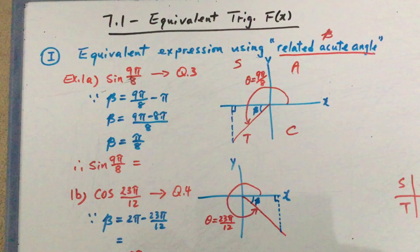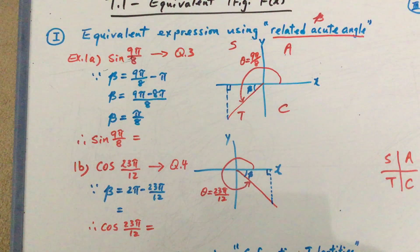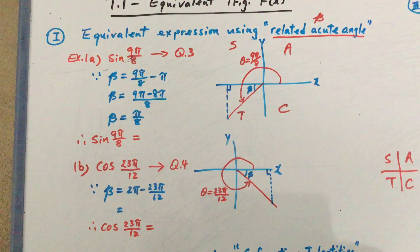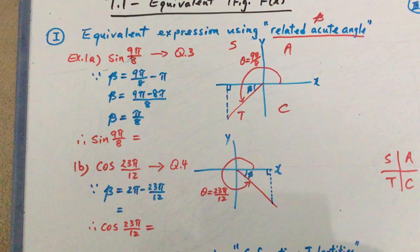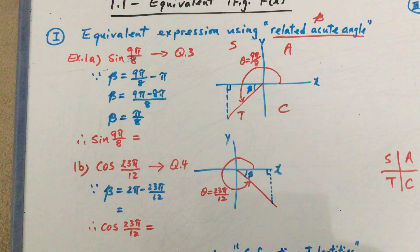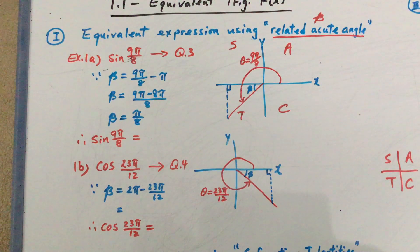If you recall the concept of the principal angles and the related acute angles, then you know that we can always use the related acute angle to work with our principal angles. So the very first type of equivalent expressions is that for any given principal angle, we can just use the related acute angle to always find the same ratio.